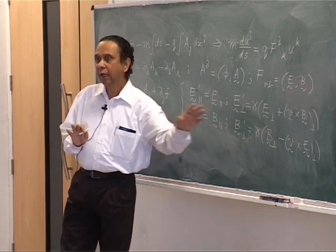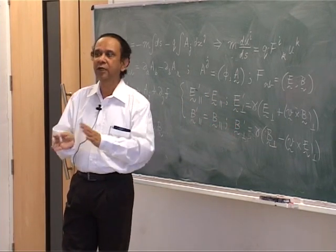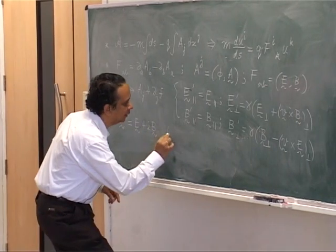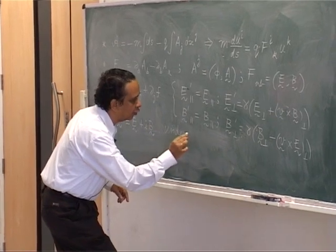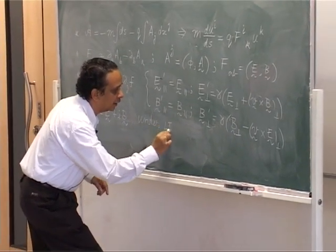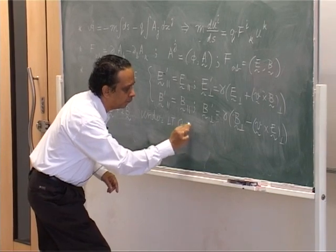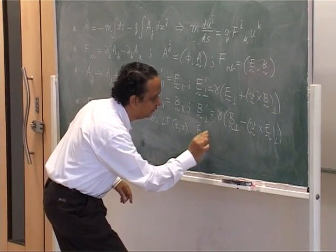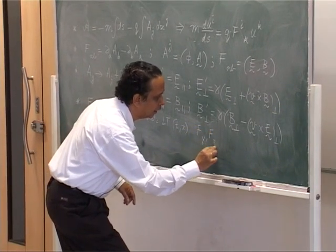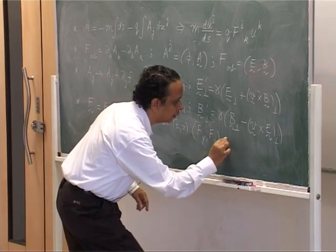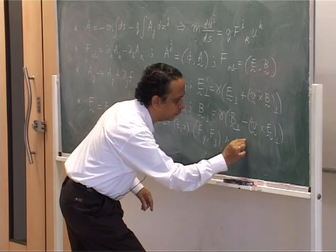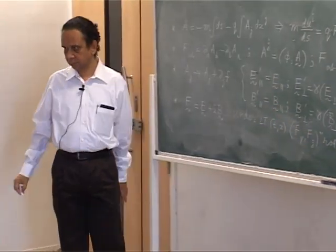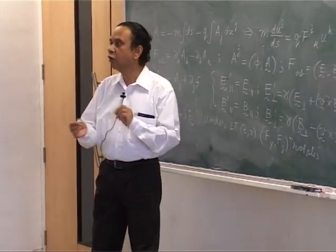You will find that under a Lorentz transformation in the t-x plane, F_x does not change, while F_y and F_z get rotated by a complex angle. That is obvious from the structure, but you should work it out.